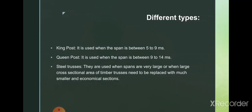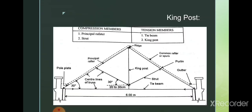When the members of the king post or queen post become very big, it is not economical to use those truss types. So in order to avoid those difficulties, we go for steel roof trusses. The members of the steel roof truss are very small compared to king post or queen post, and they can be used when the span is very large. That's why nowadays steel roof trusses are much more widely used.